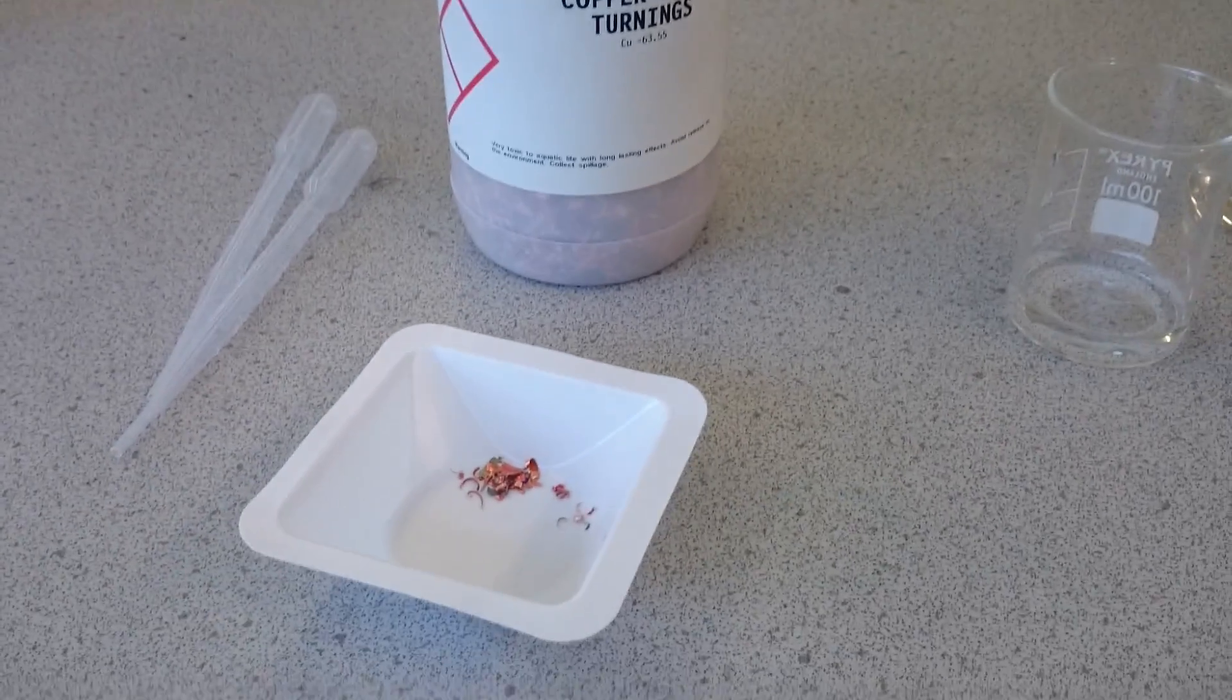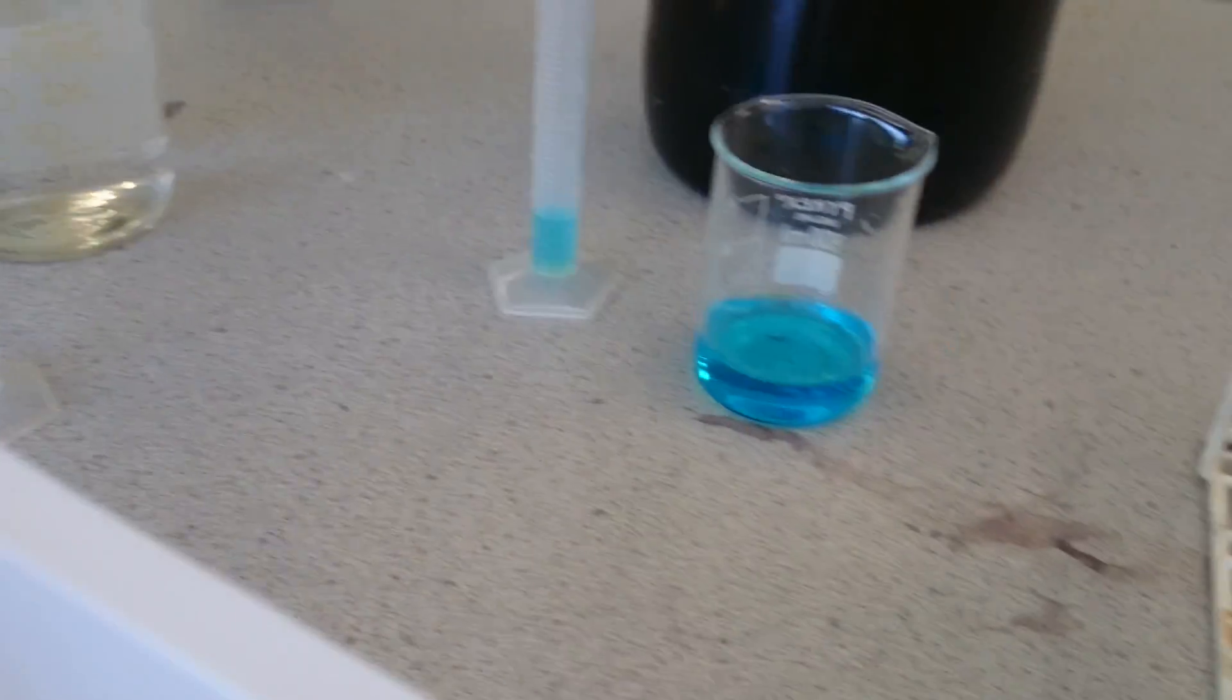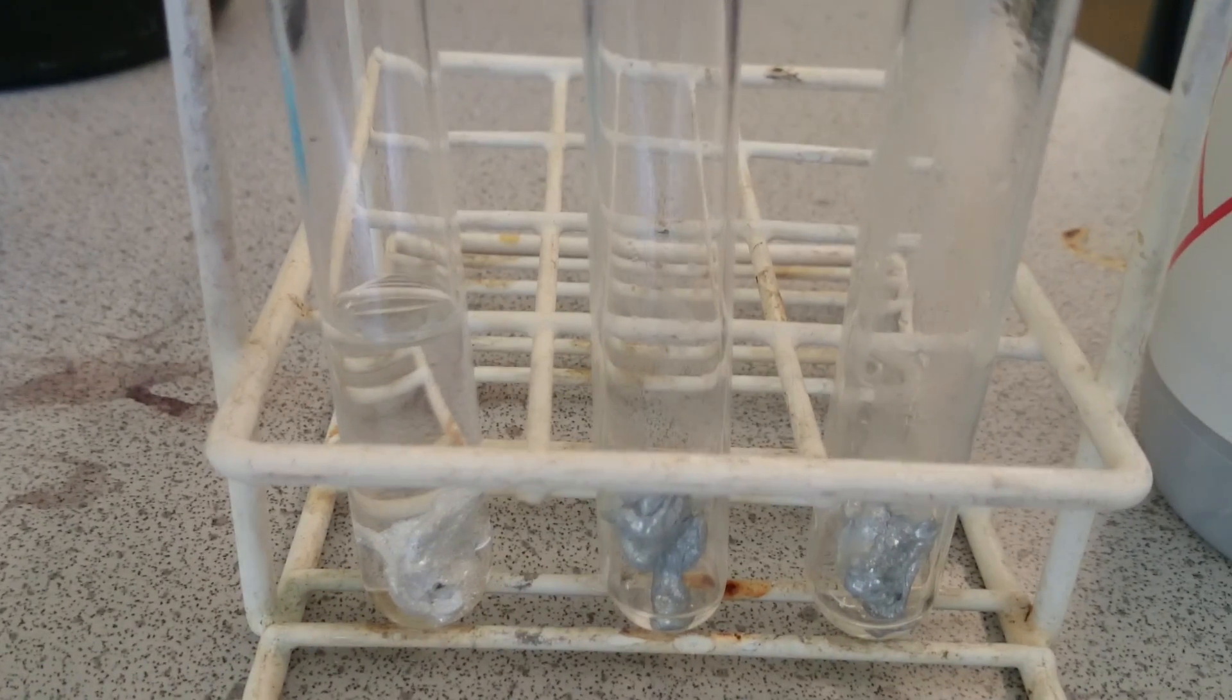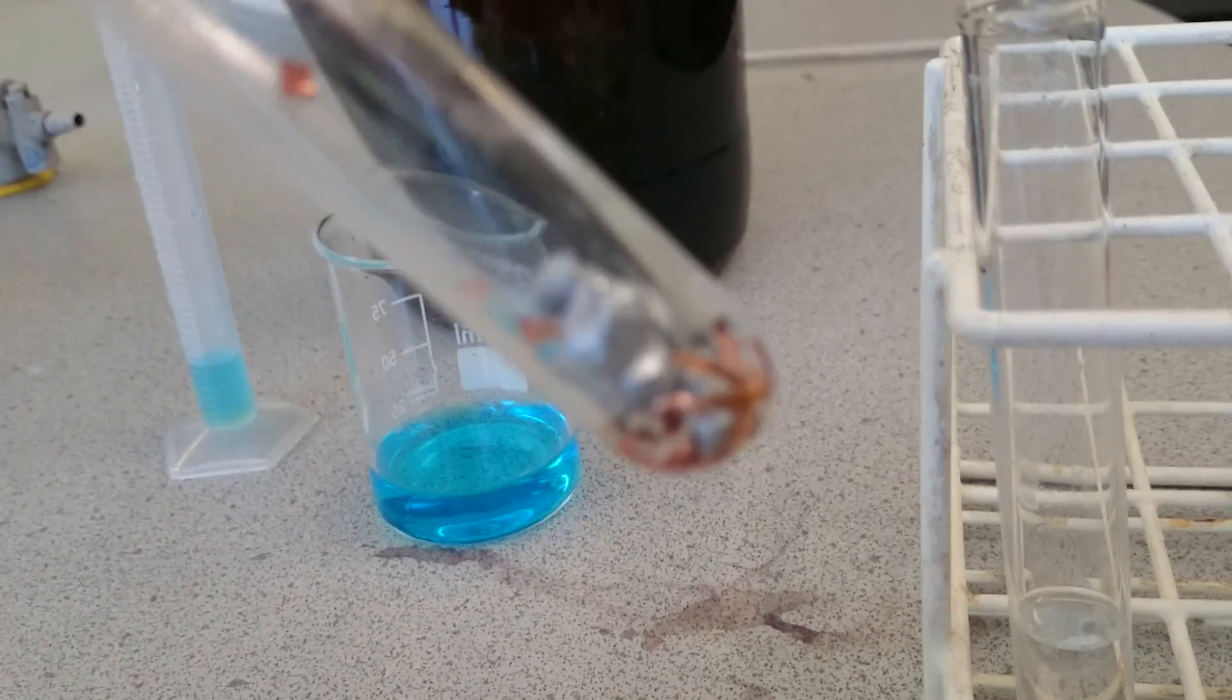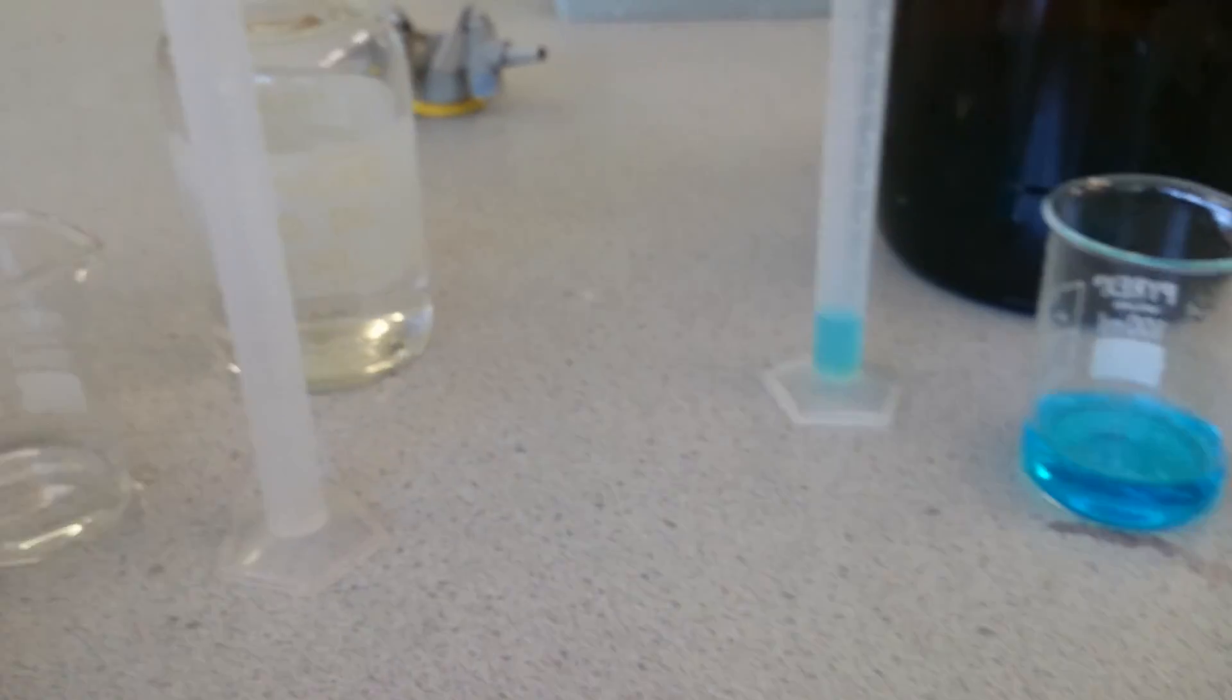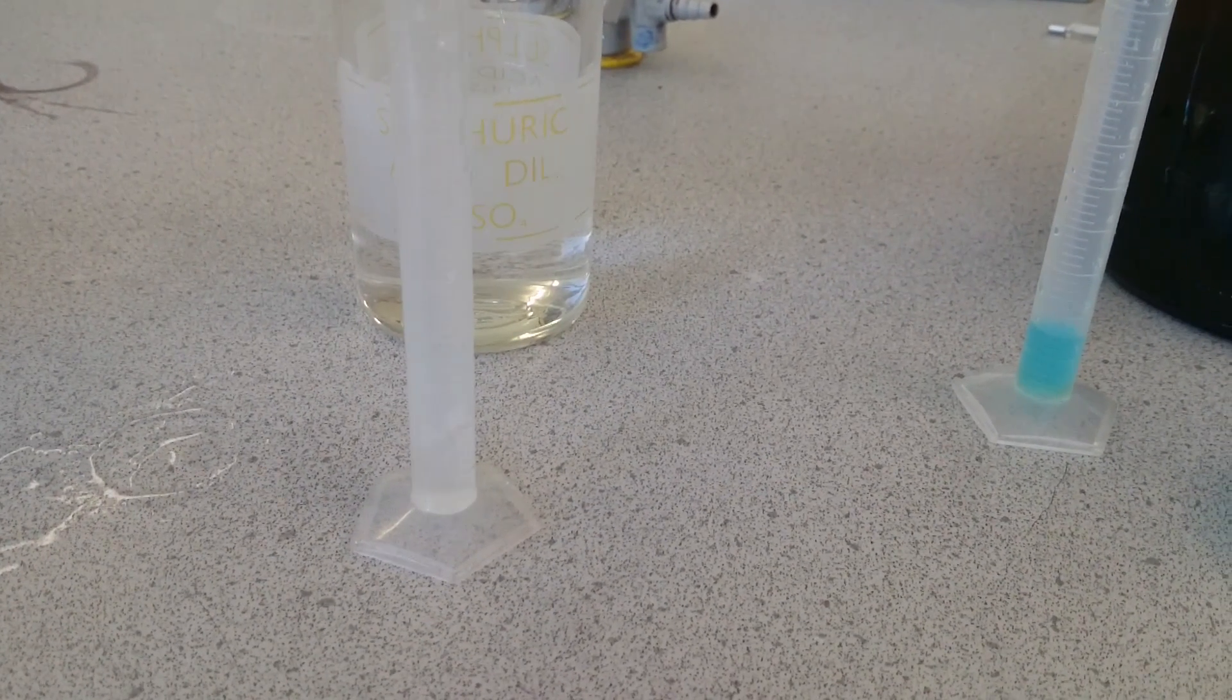To the next one, we're going to add a few copper turnings. The copper should act as a catalyst and speed up any reaction taking place. I'm just going to tip a few copper turnings into the second test tube, making sure the zinc and copper are in contact with each other. Then add approximately five centimetres cubed of dilute sulfuric acid to this one as well.